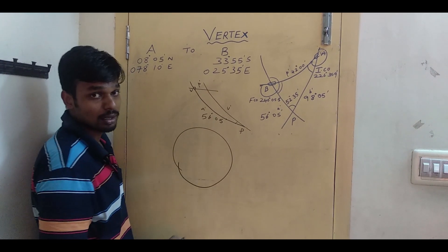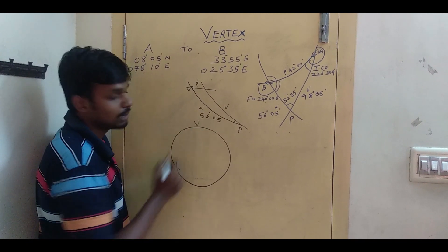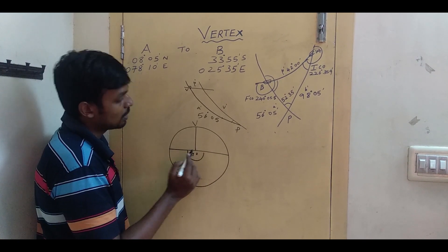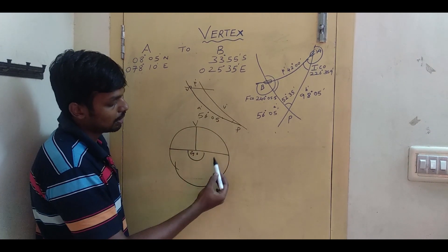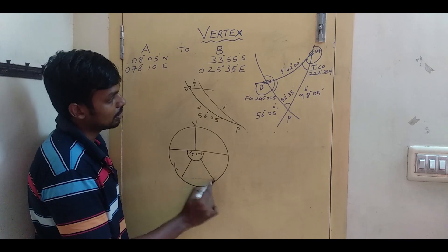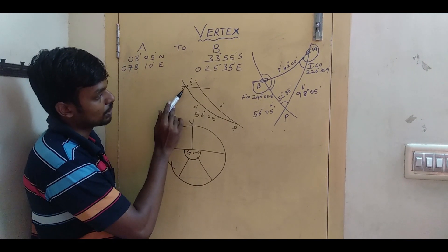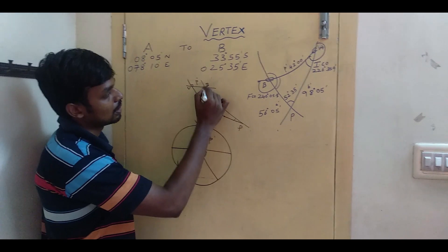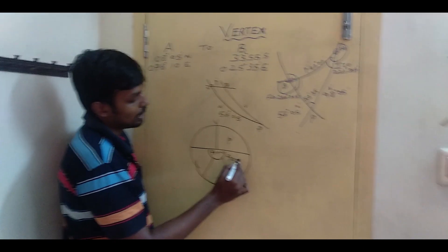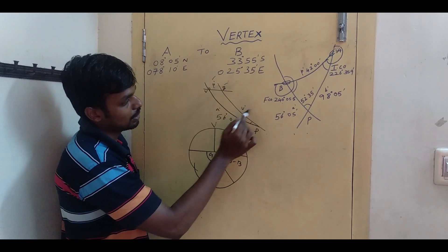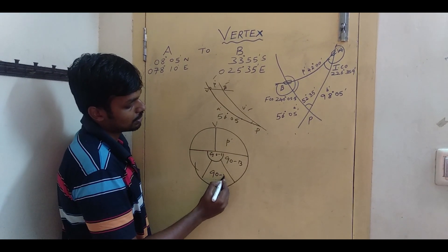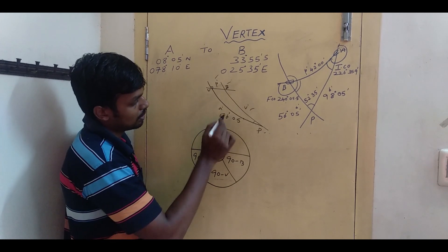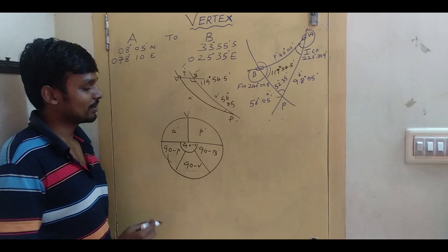We draw the Napier circle with 90° at the center. Put V in the middle, and going clockwise, write the values. Everything outside the right angle becomes 90 minus that value. Clockwise direction: P', then 90° minus B, then Q, then 90° minus V', then 90° minus B, then A'.